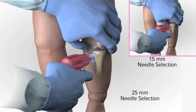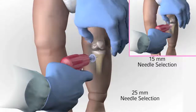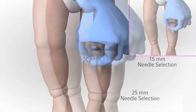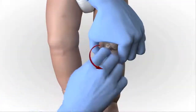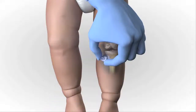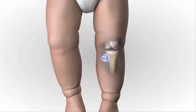Gently drill. Immediately release the trigger when you feel the pop or give as the needle set enters the medullary space. Avoid recoil — do not pull back on the driver when releasing the trigger. Hold the hub in place and pull the driver straight off. Continue to hold the hub while twisting the stylet off the hub with counterclockwise rotations. The catheter should feel firmly seated in the bone.